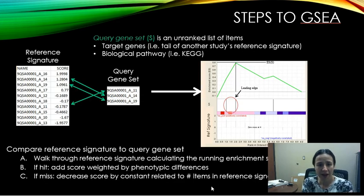I'm then going to compare that reference signature to the query gene set. Now, the query gene set is an unranked list of items, but we do have to use the same type of item. So if I have probes in my reference signature, I have to have probes within my query gene set. We can also use target genes. These could be genes that have come from the tail of another study's reference signature. So in that way, we could compare two reference signatures to each other. We could also take this in terms of a biological pathway, say, KEGG or Reactome. And so in that case, we would have a list of probes associated with a pathway.